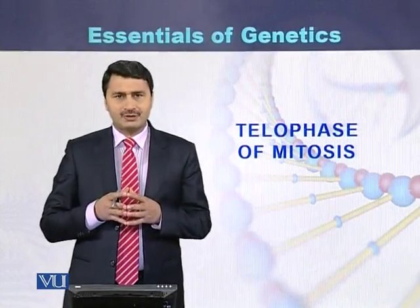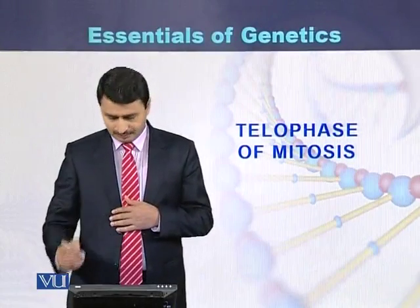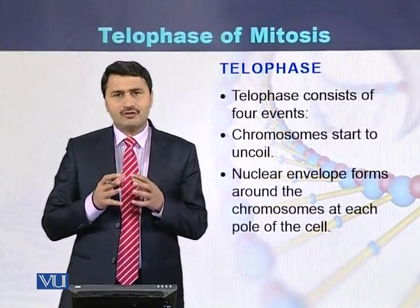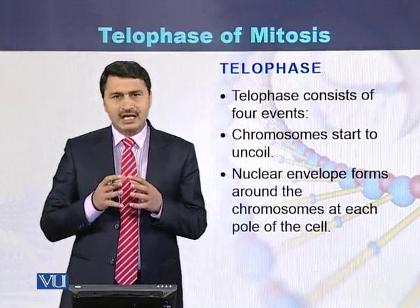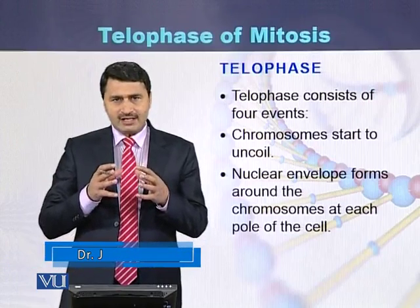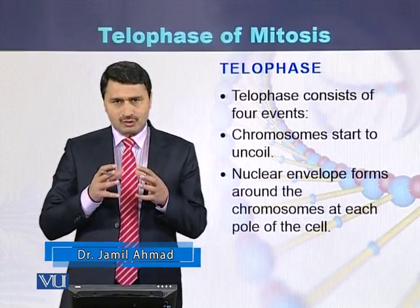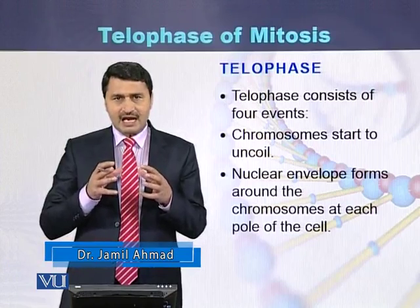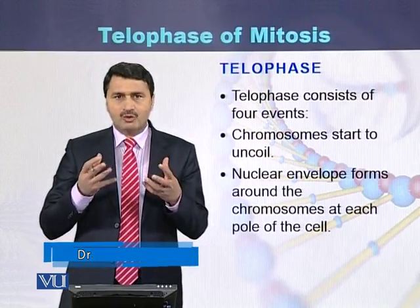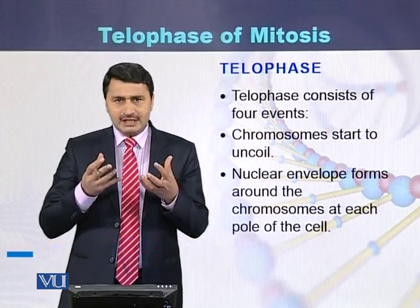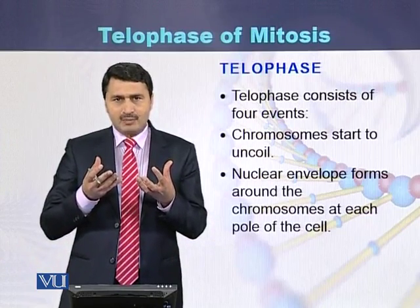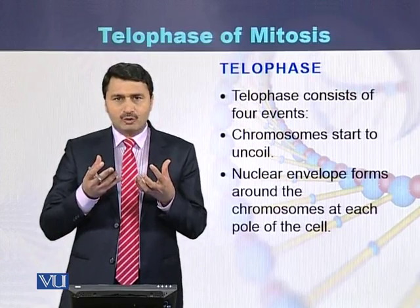Telophase of mitosis. During telophase there are four events. The first is once the chromosomes arrive at the poles, they start to uncoil and take the shape of chromatids.